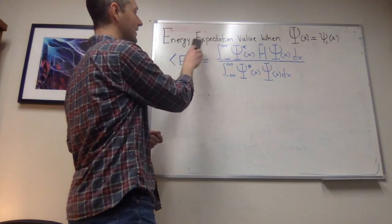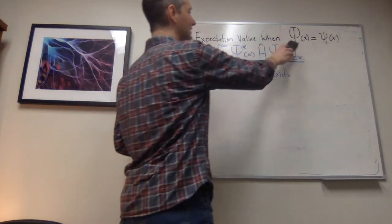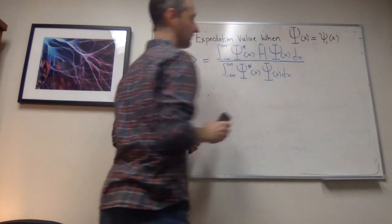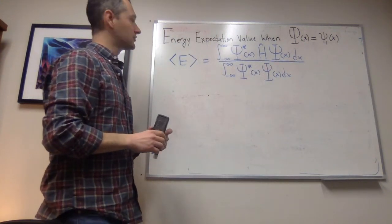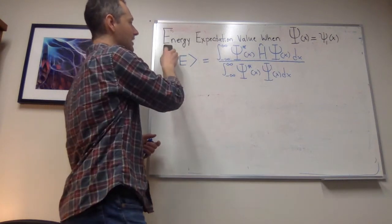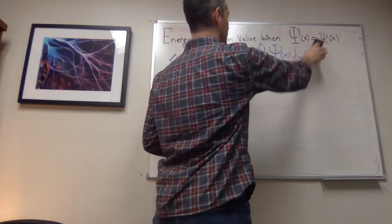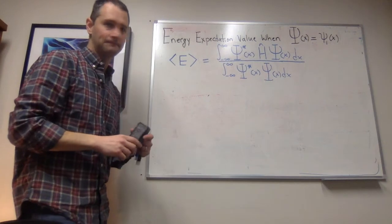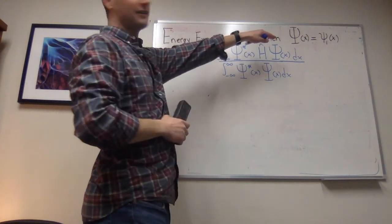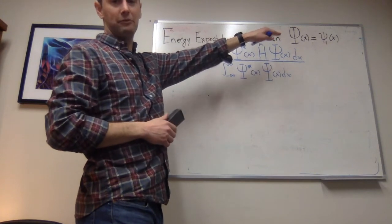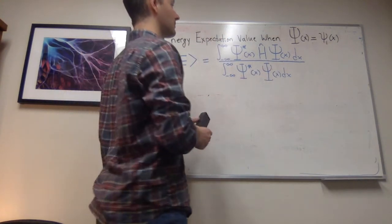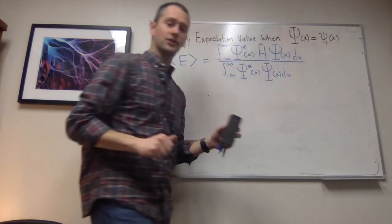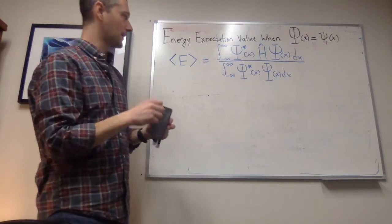Specifically, we're going to look at the case where we want to compute an energy expectation value when our wave function — the state of our quantum mechanical system — is equal to the first energy eigenfunction. Think back to the particle in the box: this is like saying our electron, described by big Psi, is equal to the ground state psi_1. So does this electron have a precise energy? Yes, because it's in an energy eigenstate with energy E1.